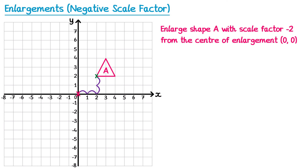Since this is scale factor negative 2, not positive 2, I need to do the opposite of that journey. Rather than going 2 right and 2 up, I go back to the center and go 2 left and 2 down — that's scale factor negative 1. I repeat that a second time, going 2 left and 2 down again for scale factor negative 2. So the green cross maps to its new position.